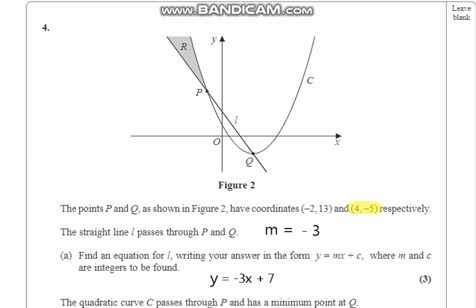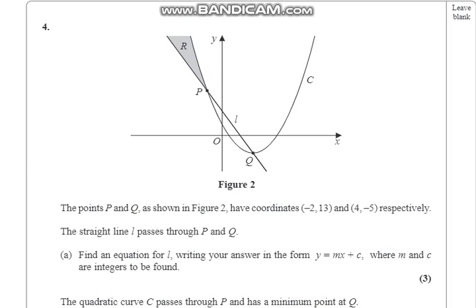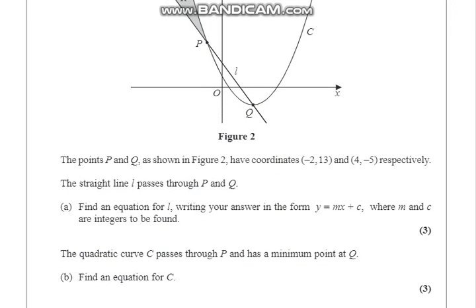Now moving on to the B part. The B part is find an equation for C. The quadratic curve C passes through P and has a minimum point at Q. So there you go, that's a curve here, that's a parabola curve for C. And we have to find the equation for C here.